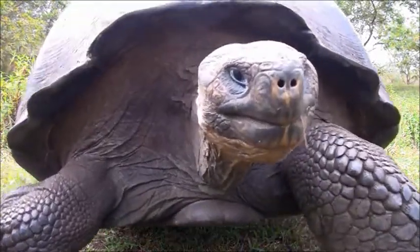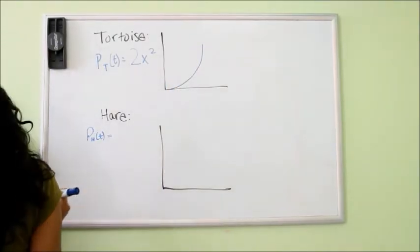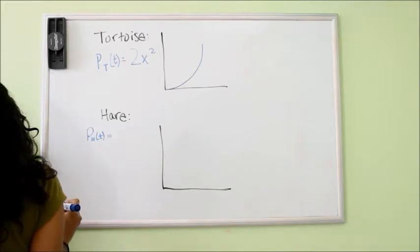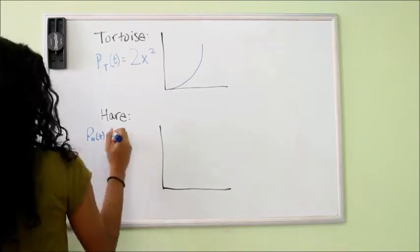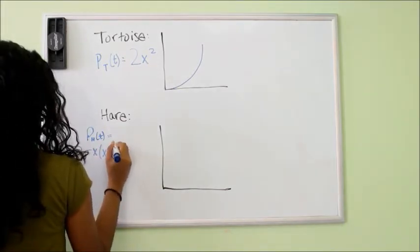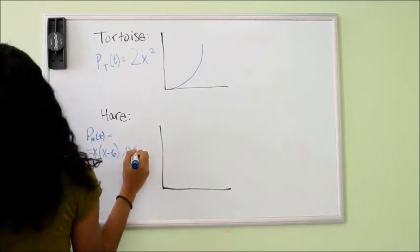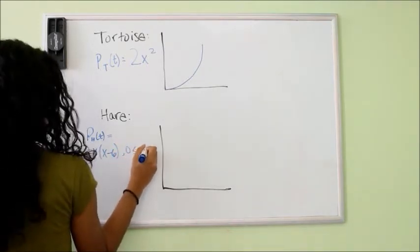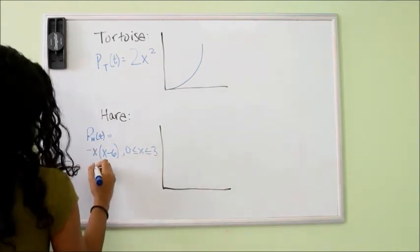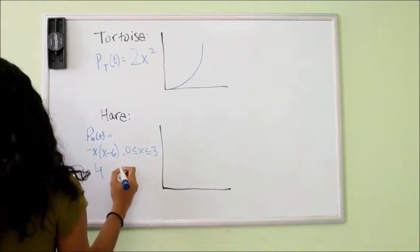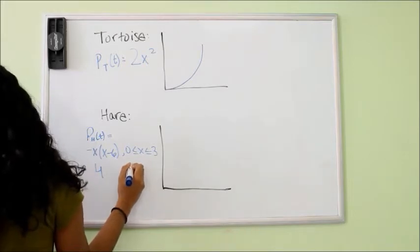It's on. The position of the tortoise from the starting point is described by the function p(t) = 2x², where t equals time in hours. The position of the hare from the starting point is described by the piecewise function p(t) = -t(t-6) from 0 to 3, and 9 when 3 is less than x, which is less than or equal to 6.